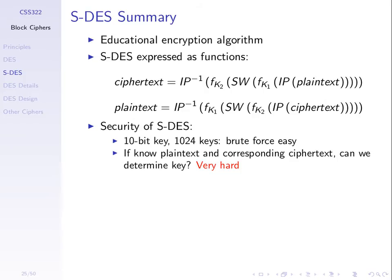How good is simplified DES? It has a 10-bit key, meaning there are 1,024 keys. You can do a brute force attack very easily, so that's not good. But if you know a pair of plaintext-ciphertext — you know that a ciphertext was generated by encrypting a particular plaintext — then it's hard to find the key. There's no proof of how hard it is, but the use of permutations and substitutions makes it hard to find the key given a pair.